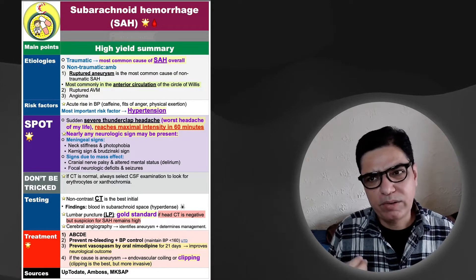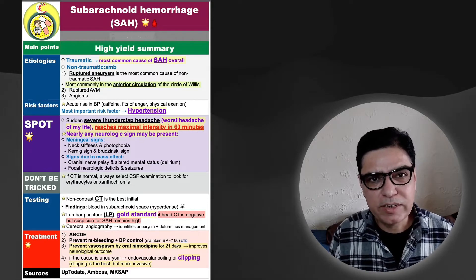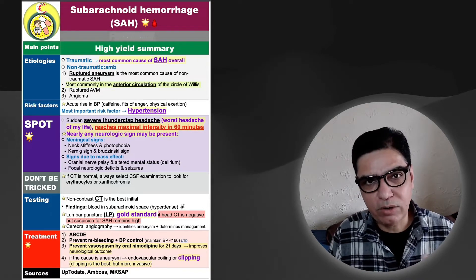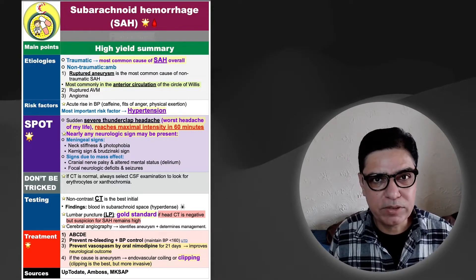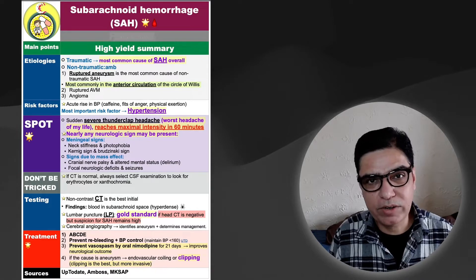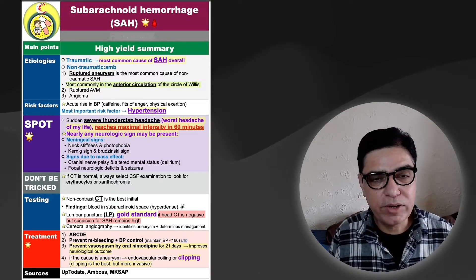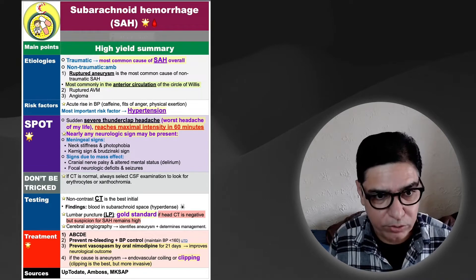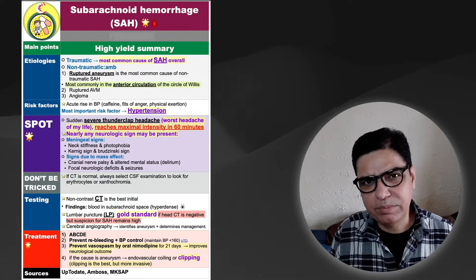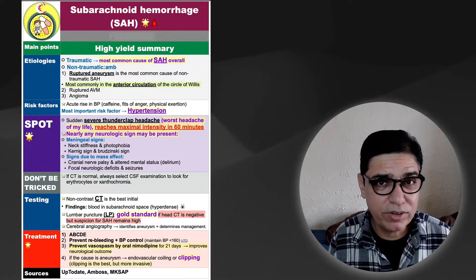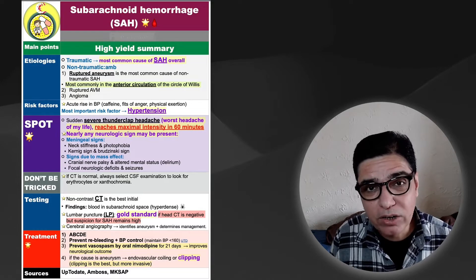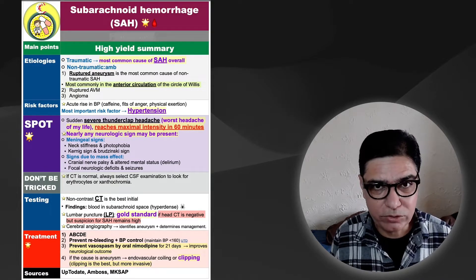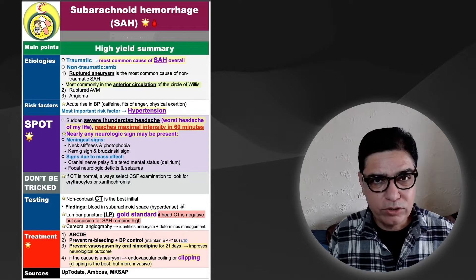Another cause is arteriovenous malformation (AVM), where arterioles form a direct connection to venules bypassing capillaries. This leads to high pressures inside the venules, which can burst — and if this happens in the subarachnoid space, it causes subarachnoid hemorrhage. Additionally, benign tumorous growth of blood vessels, known as angiomas, can also rupture due to pressure changes and lead to subarachnoid hemorrhage, though this is quite rare.